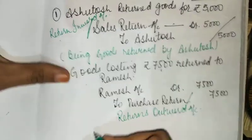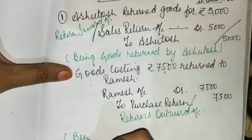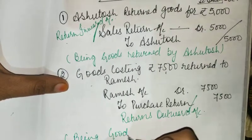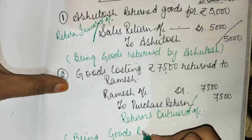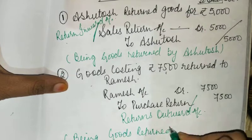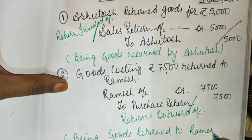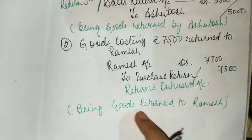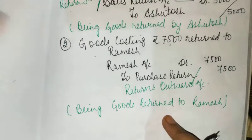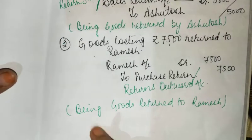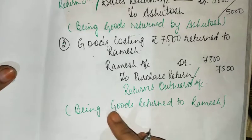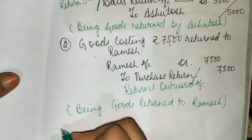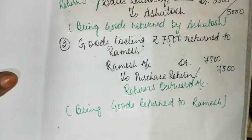Here we will write the narration: Being goods returned to Ramesh — just add 'Being' at the start and write whatever matches the transaction. Being Rs. 7,500 goods returned. Then entry number three.